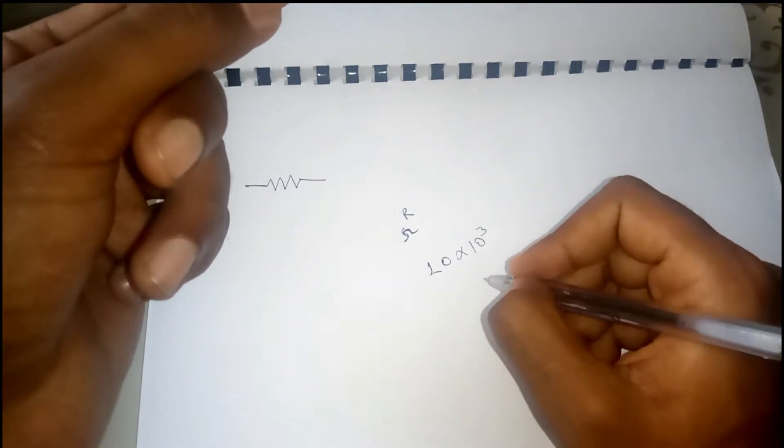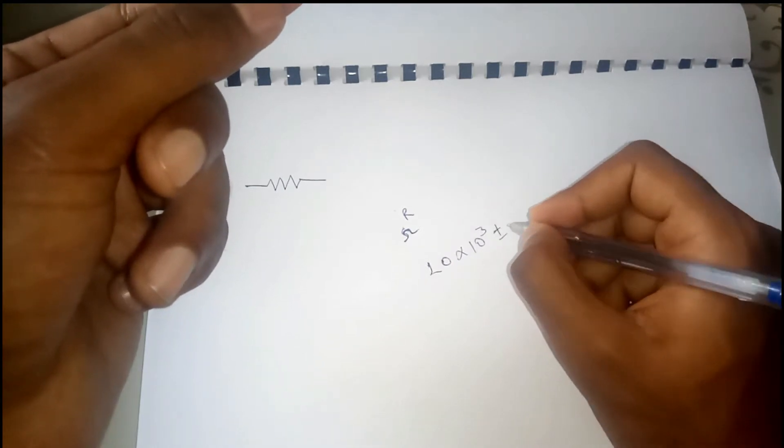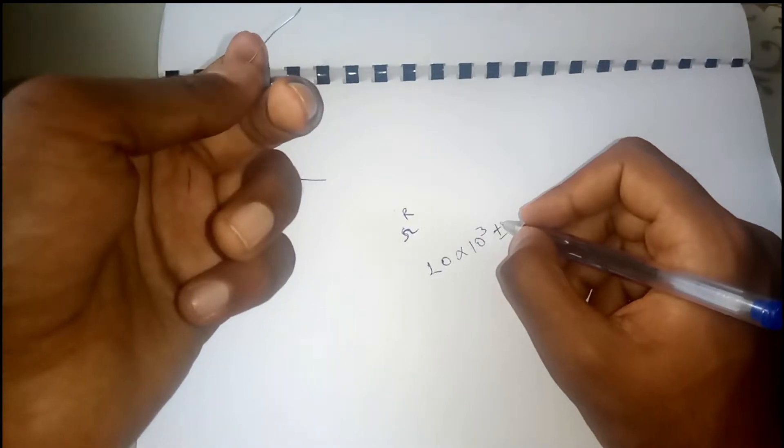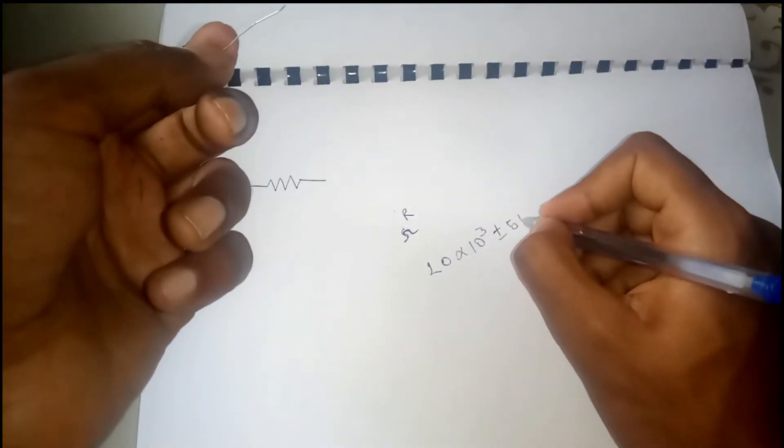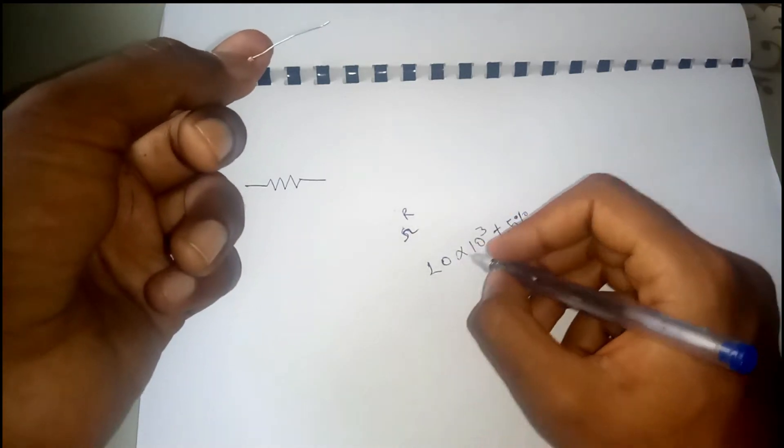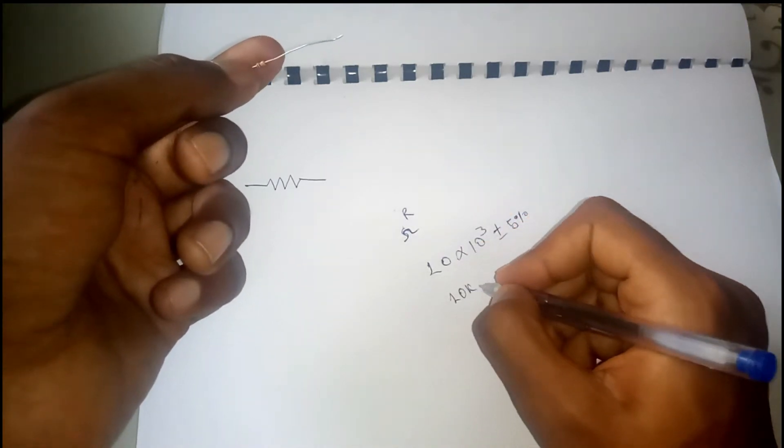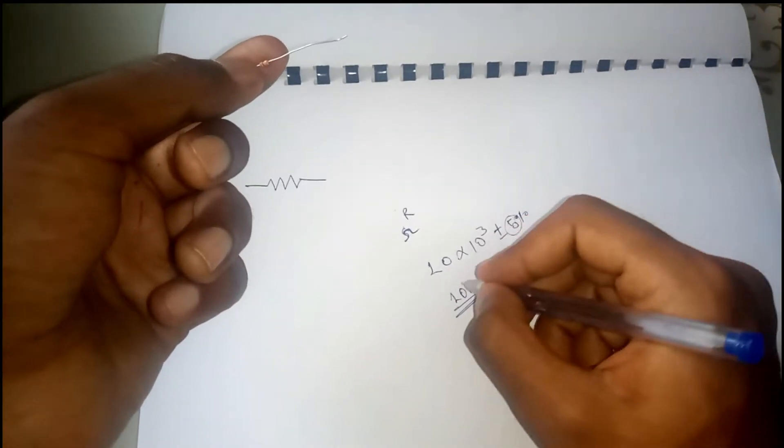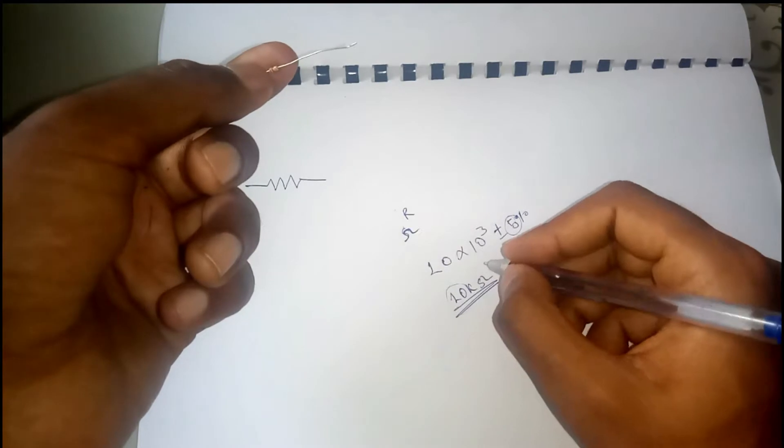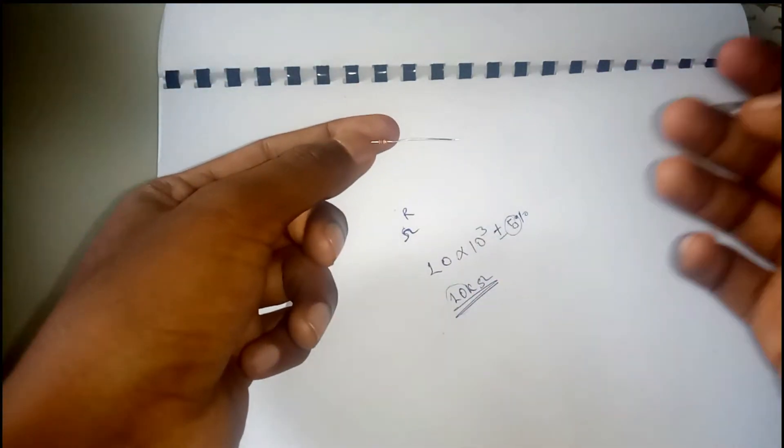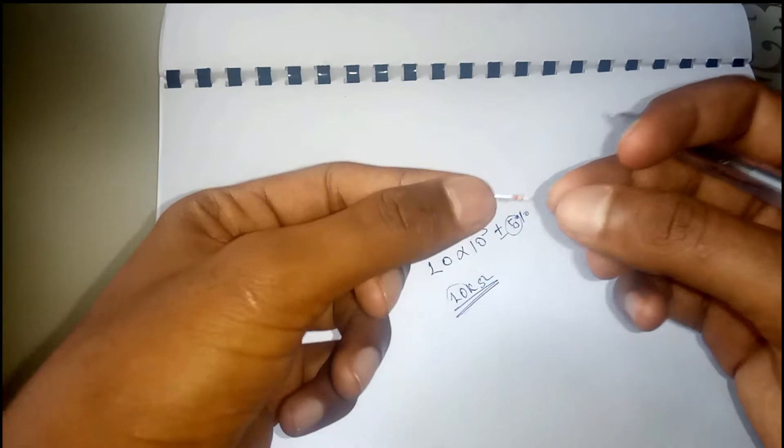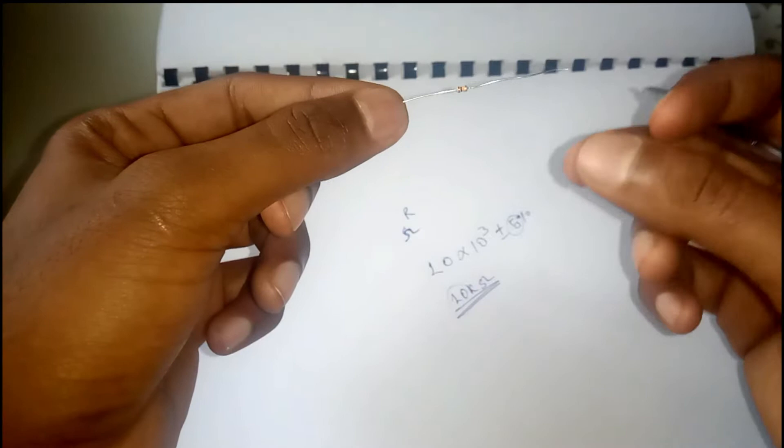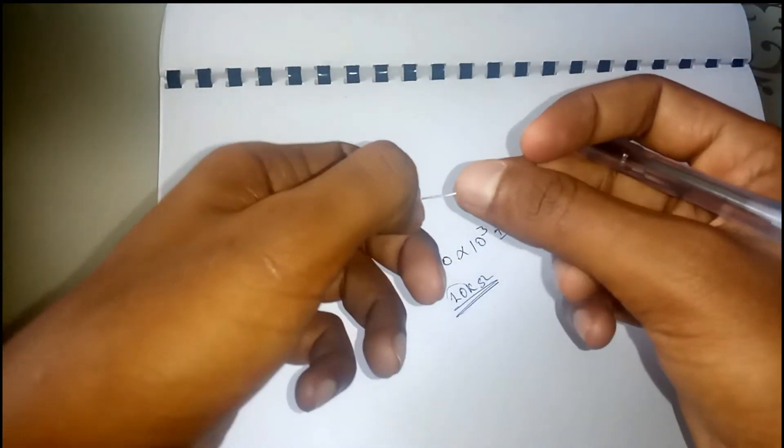Orange is the third power, so this is 10 to the power 3. The gold color tolerance is plus or minus 5 percent. The tolerance is the percent of variation. This is how you determine a resistor value using the color code.